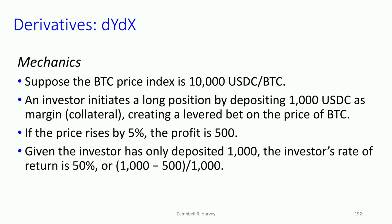Suppose the price goes up by 5%, so Bitcoin goes from 10,000 to $10,500. The profit is going to be $500. Now think about an investor that simply bought the Bitcoin — fully collateralized, putting $10,000 out, it goes to 10,500, and they've made 5%. With the futures position, the investor puts up only $1,000 but makes the same $500. So the rate of return is 50%.